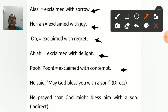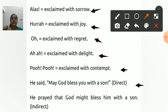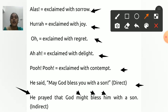For optative sentences, for example: He said, 'May God bless you with a son.' This is an optative condition, so we write: He prayed that God might bless him with a son. 'May' changes to 'might', and 'you' changes to 'him'.